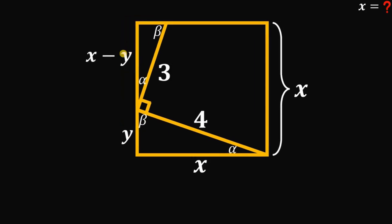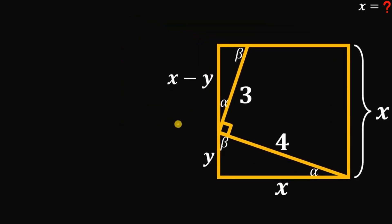Now using the concept of similar triangles, we can have the ratio of the hypotenuse to the longer leg. So we have 4 over x equals 3 over x minus y. Now we're going to focus on this equation. Cross multiply. So we have 4x minus 4y equals 3x.